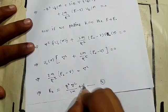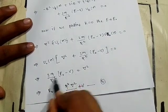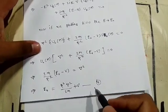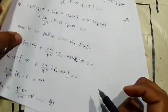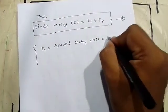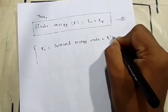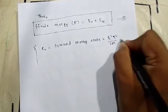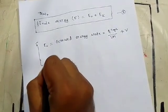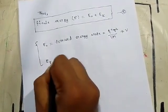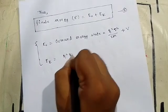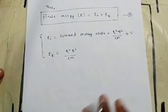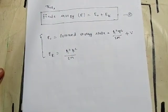So the final result is: the total energy E(k) = (ħ²k²/2m) + V, where the term (−ħ²/2m)∇² plus V gives E(k) = ħ²k²/2m. Thank you for watching this video.